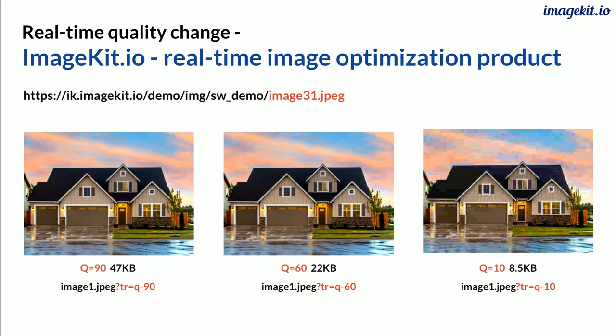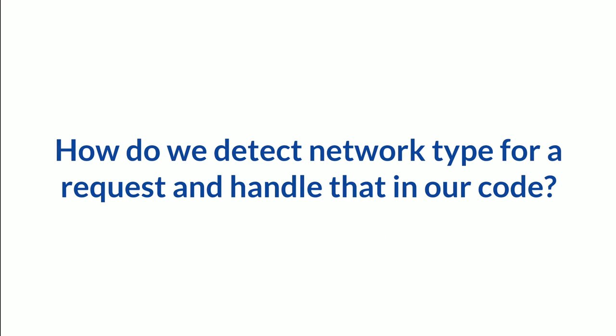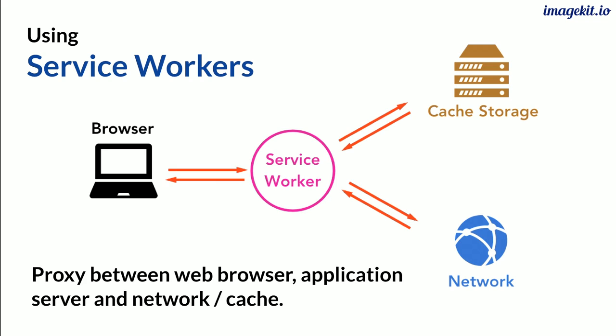So we have figured out two parts: we know what network the user is on, and we have a way to change the quality in real time — you can use anything apart from ImageKit if you can do that. Now, how do we handle all of this in our code? The idea is that we do not want to be changing our code. We cannot have our server sending different URLs for different network speeds. This is where the service worker comes in.